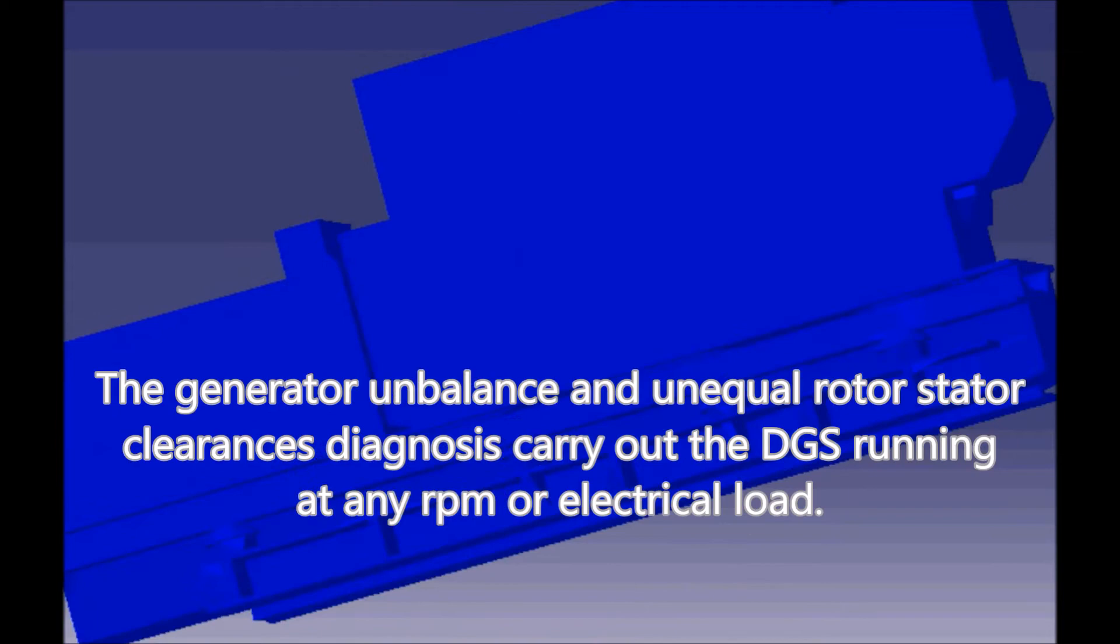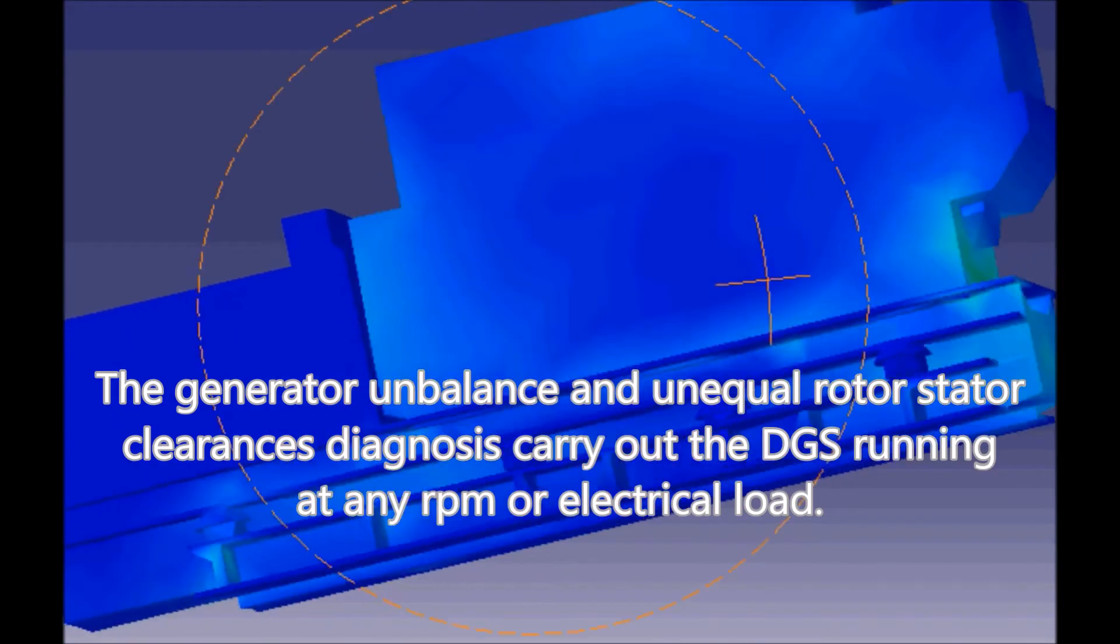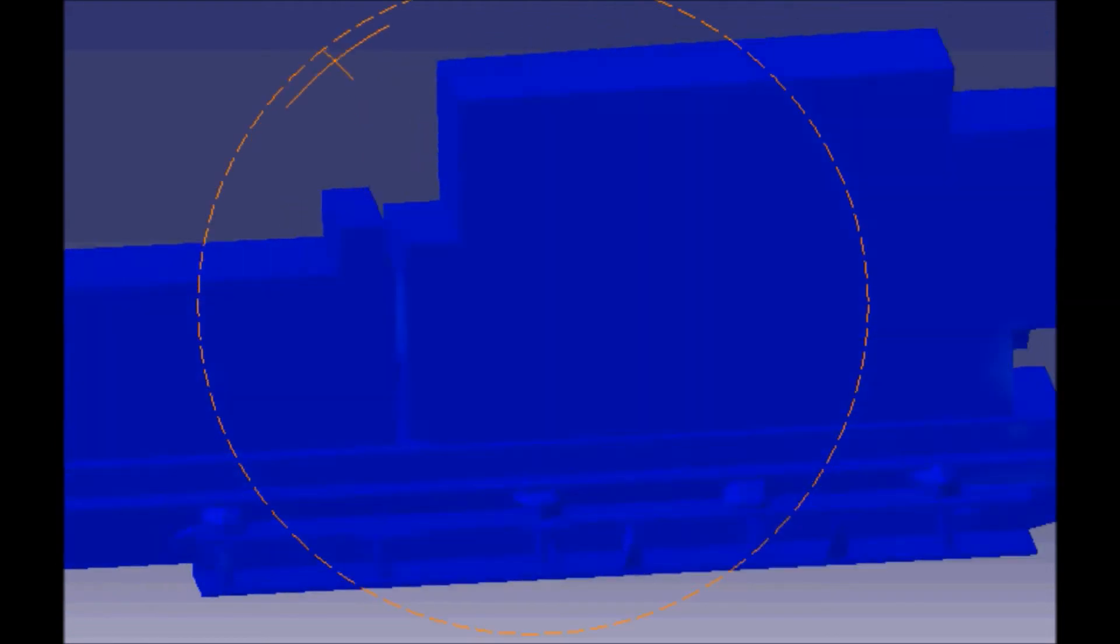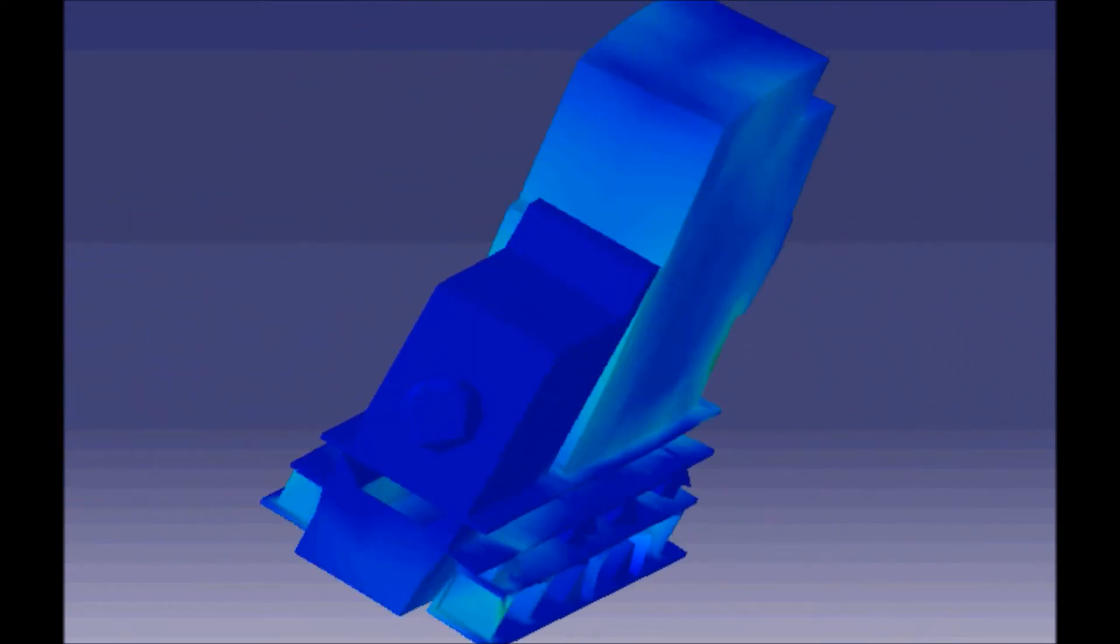The generator unbalance and unequal rotor stator clearances diagnosis is carried out with the DGS running at any RPM or electrical load.